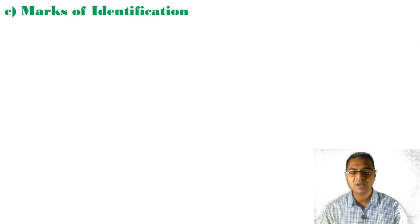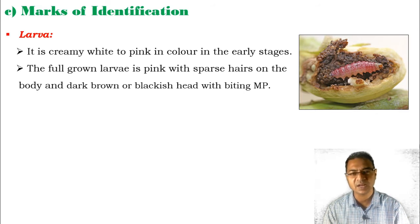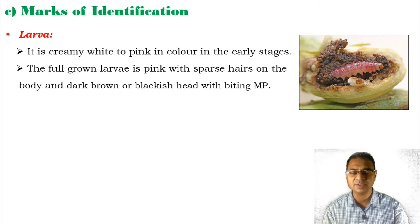Now, the marks of identification of the developmental stages and the adult. First, the larva — basically the caterpillar. It is creamy white to pink in color in the early stages. After full-grown, the larva is completely pink in color with sparse hairs over the body. The anterior end has a brownish or blackish head, and at the terminal end, biting mouthparts are present.